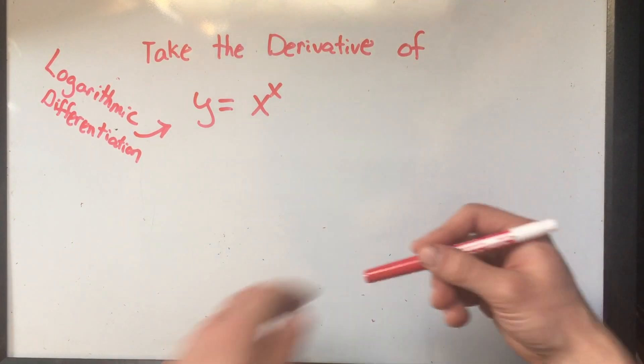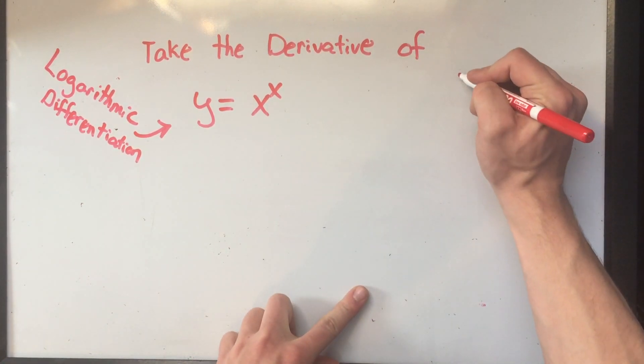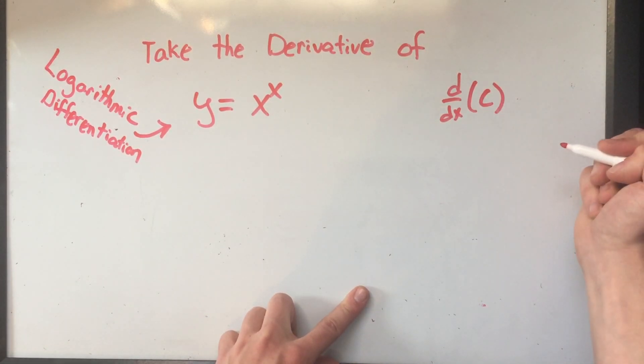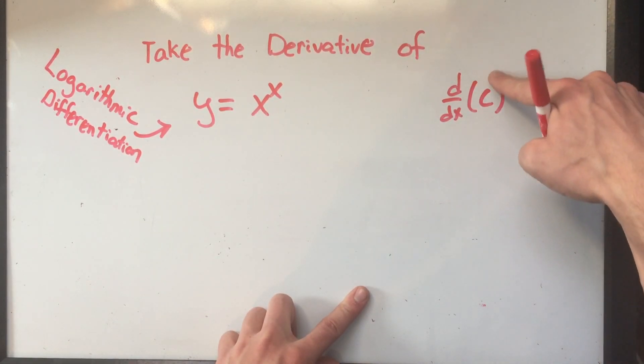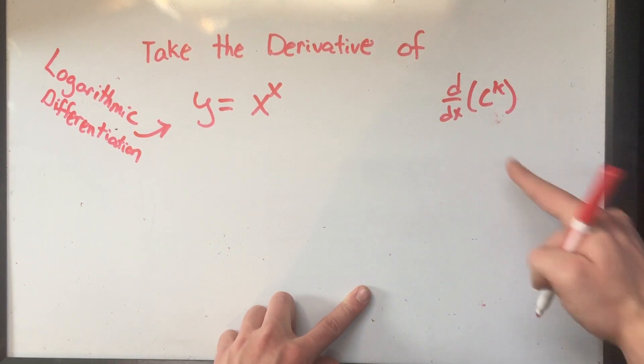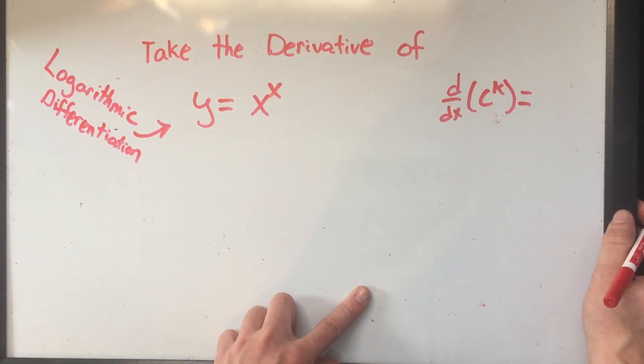Alright, well you've done, probably up to this point, you've done the derivatives of a constant, right? Or even better, a constant to a constant. Well, since a constant to a constant power, something like 5 squared, is also a constant, you know the derivative of a constant is zero.